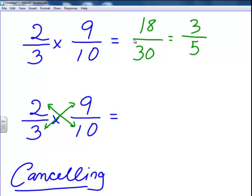So if I look at the 2 and the 10, I realize that they can both be divided by 2 evenly. So 2 divided by 2 is 1, and 10 divided by 2 is 5. Now let's look at the 3 and the 9. Both of these numbers can be divided by 3. So 3 divided by 3 is 1, and 9 divided by 3 is 3.